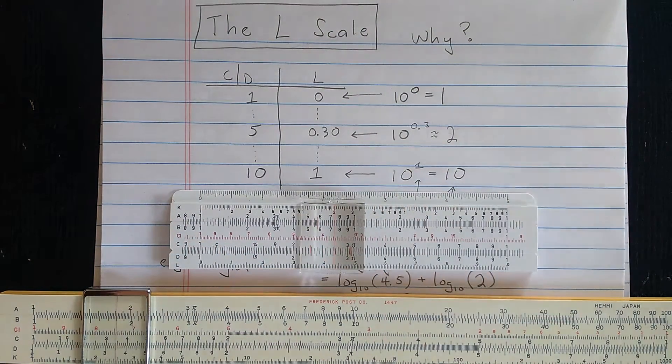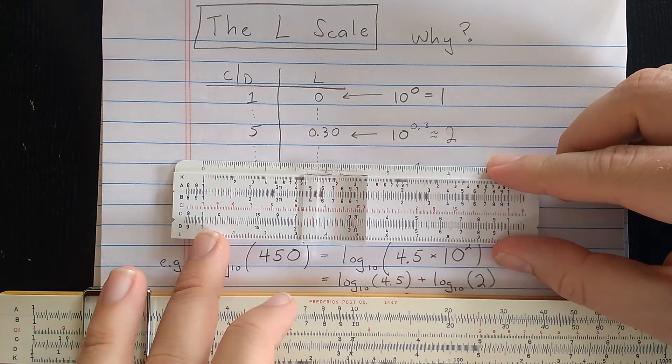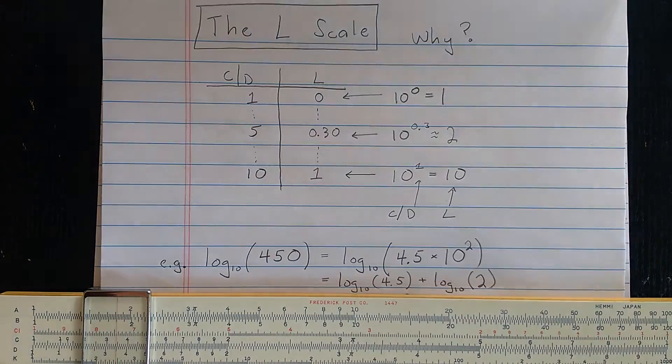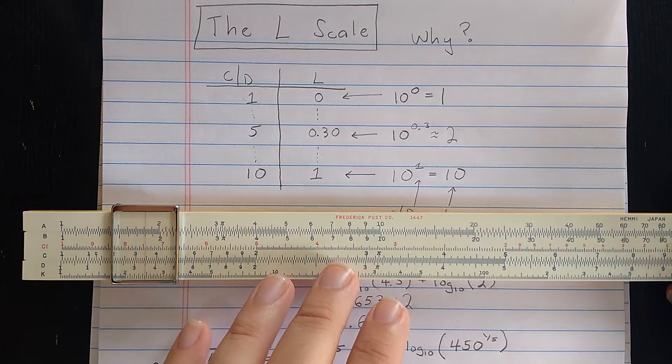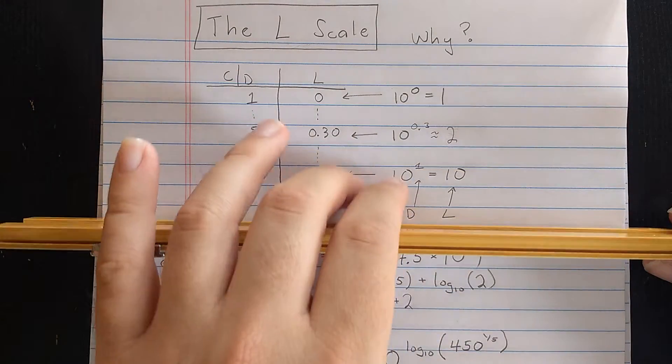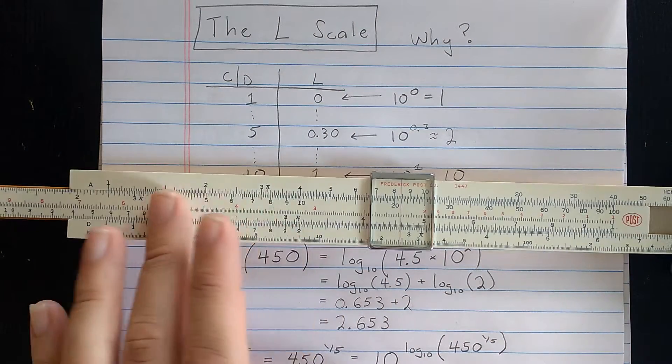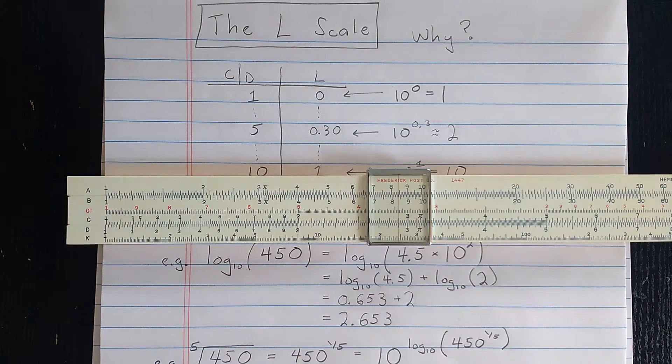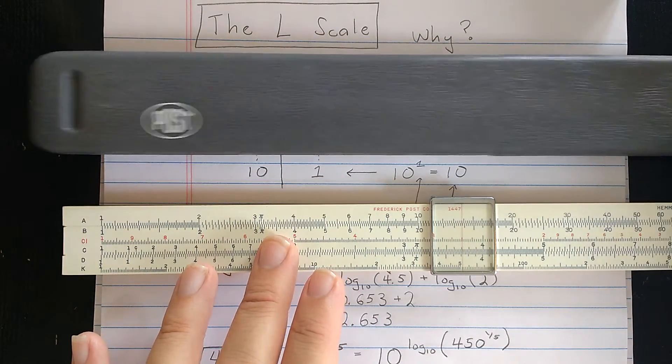This is what the L scale looks like in a lot of slide rules with the L on the base, including this basic Rietz-type slide rule. Even simpler, Mannheim-type slide rules have the L scale on the back. Here is a Frederick Post 1447, a very common slide rule, made in Japan, bamboo with a celluloid face, metal cursor. This is a very beautiful slide rule, but actually very easy to find and not an uncommon item. There's a lot of them out there.